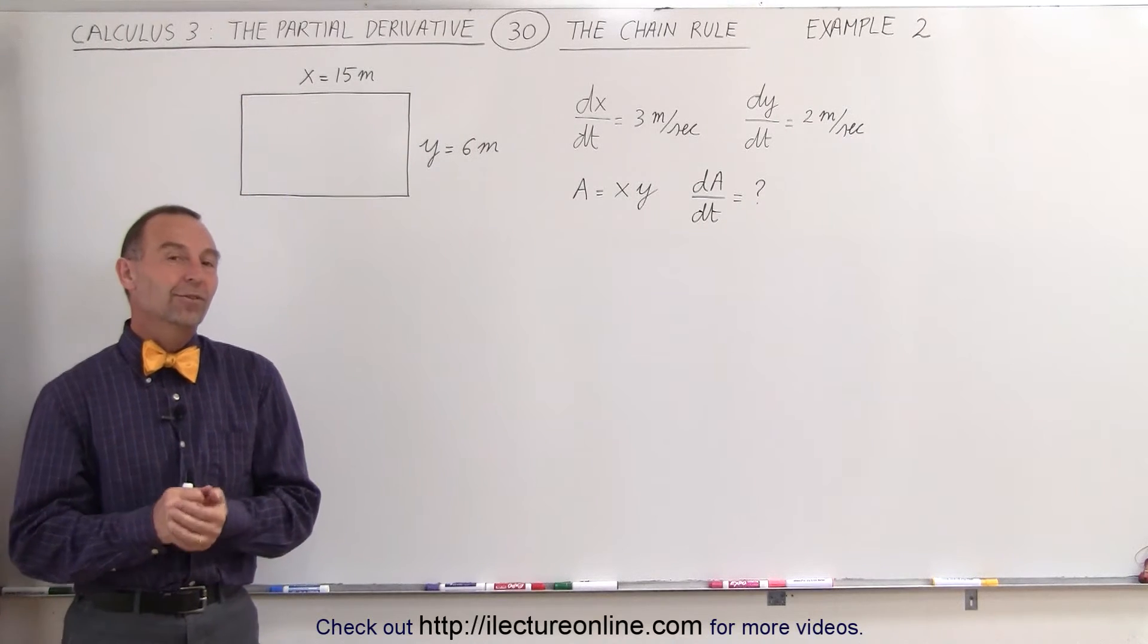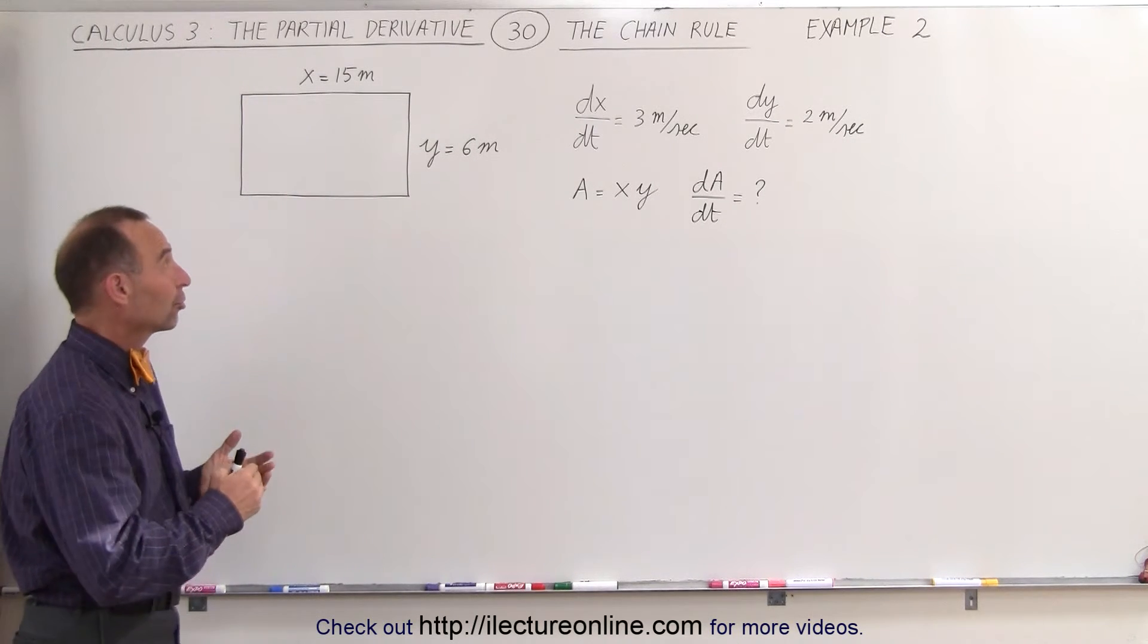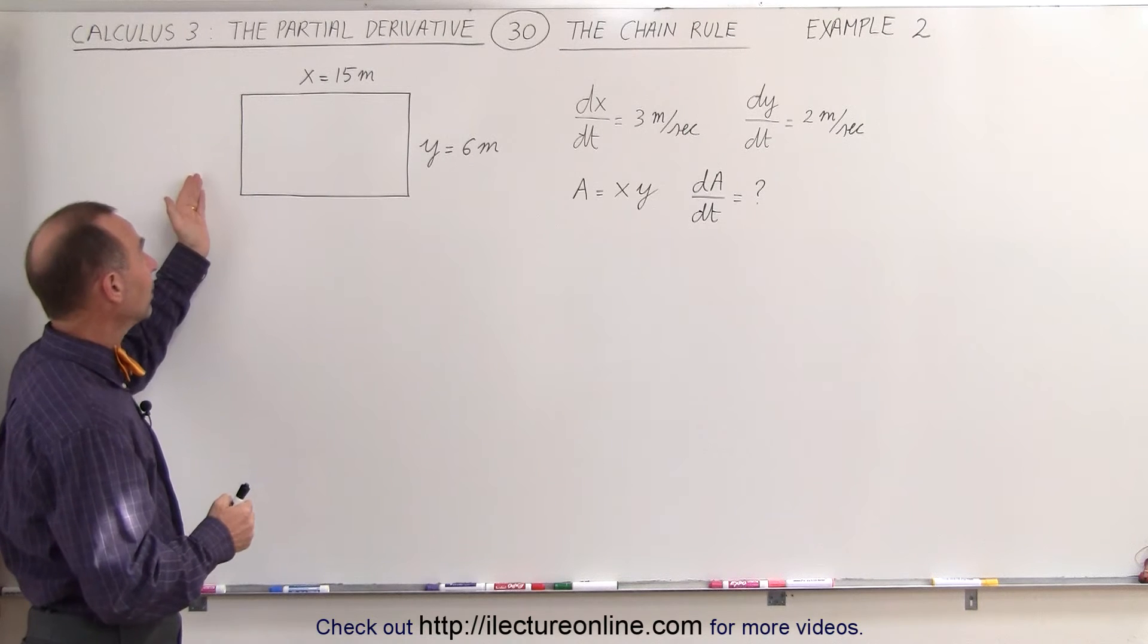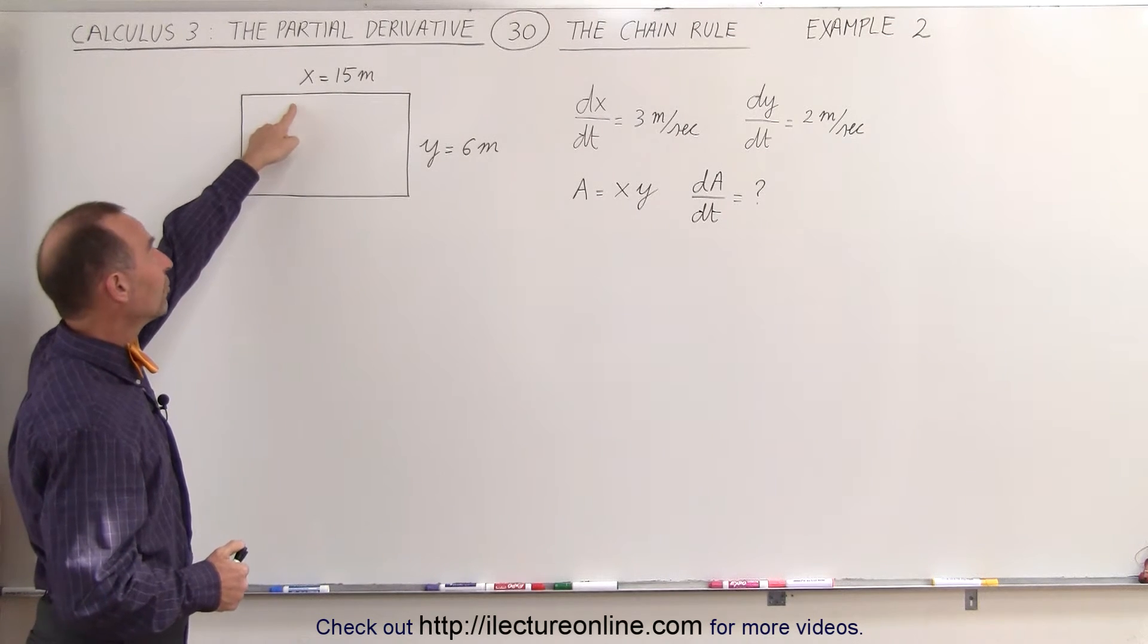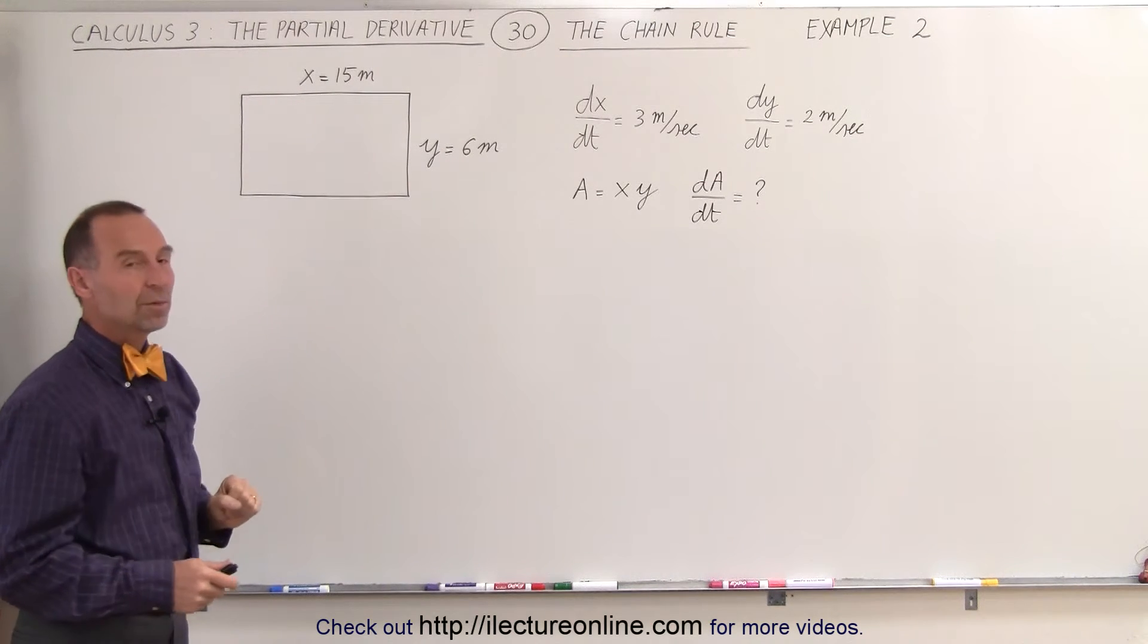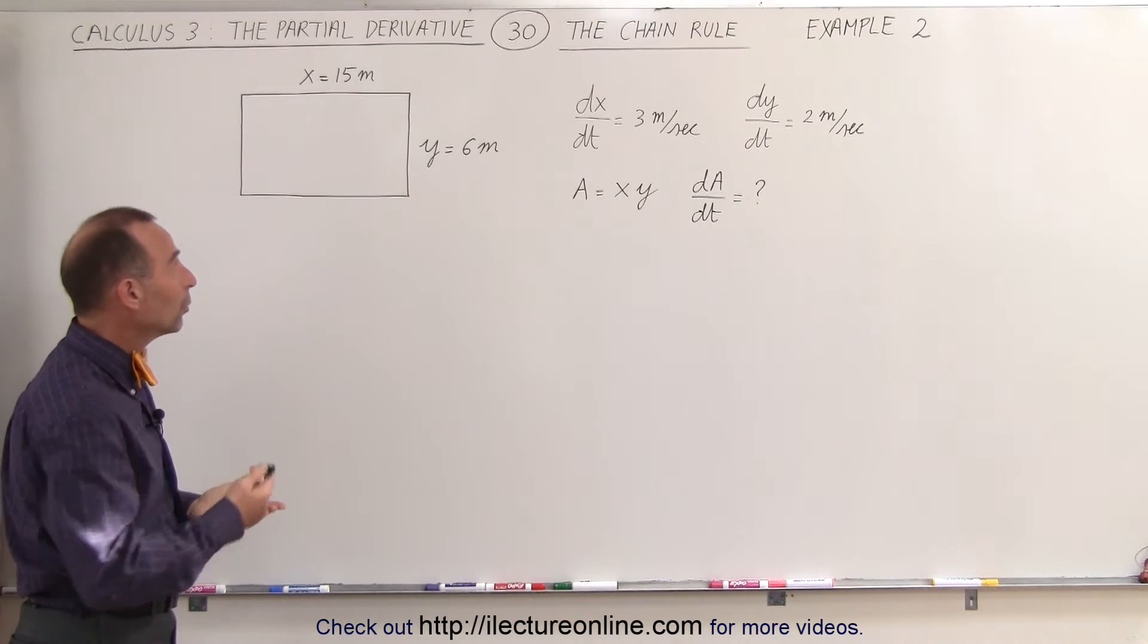Welcome to ElectronLine. Here's another example of how to take the partial derivative. We have a rectangle. At the moment, the length is 15 meters, the width is 6 meters, represented by the variables x and y.